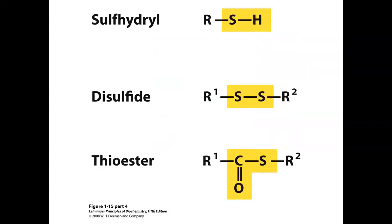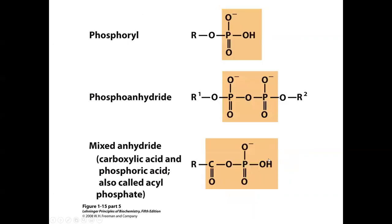Other common functional groups: a sulfhydryl group — like a hydroxyl group but with sulfur replacing oxygen. A disulfide bond, formed when two sulfhydryl groups are oxidized — many proteins contain disulfide bonds. A thioester — not a regular oxygen ester, with sulfur replacing oxygen.